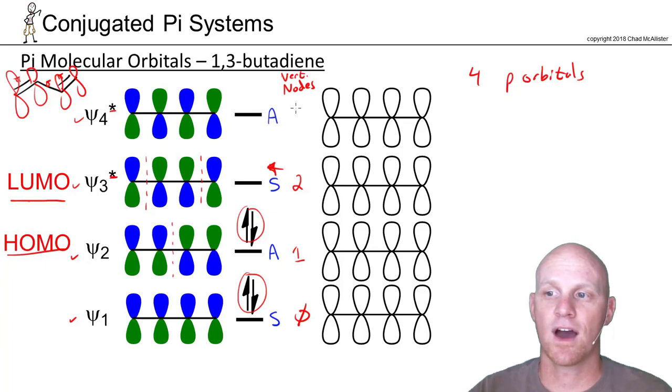So and then finally in psi-4, you've got three nodes. You've got one here, one here, and one here between every single composite P orbital that made up that molecular orbital.